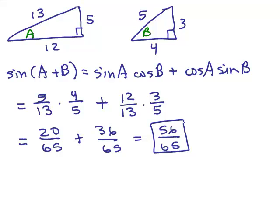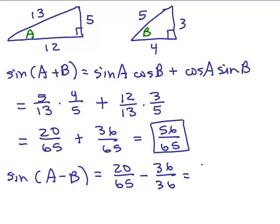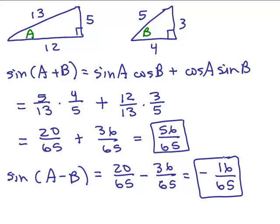Making sure the sine is less than 1 — and notice 56/65 is close to 1, which makes sense because a plus b is almost 90 degrees and the sine of 90 degrees is 1, so that's a reasonable answer. For the sine of a minus b, the only difference is the plus sign becomes a minus: 20/65 minus 36/65 equals negative 16/65. Does it make sense that the sine is negative? Yes — b is a bigger angle than a, so a minus b gives a negative angle, which lands in quadrant 4 where the sine is negative.